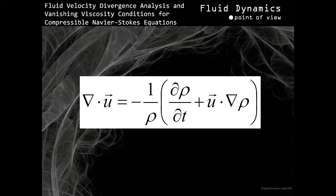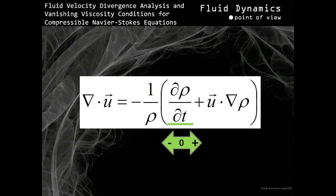The second term within the brackets represents the dot product of two vector fields. The first vector field is the fluid velocity vector field, while the second vector field represents the gradient of fluid density. The dot product between those two vector fields results in a scalar function. The resulting scalar function could have any scalar value depending on exact position in space, point in time, fluid velocity, and fluid density gradient vector fields. The scalar value can range from negative, through zero, to positive real values. The same is applicable for the first term in the brackets, whose scalar value depends on exact position in space as well as point in time.